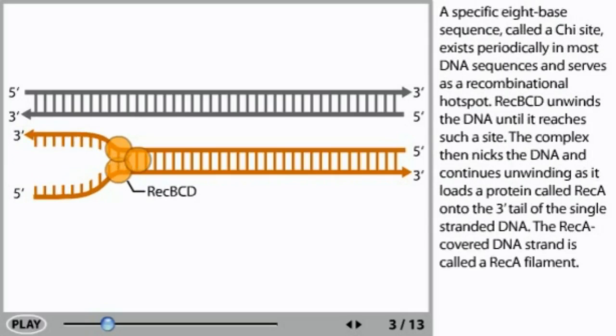A specific eight-base sequence called a chi-site exists periodically in most DNA sequences and serves as a recombinational hotspot. RecBCD unwinds the DNA until it reaches such a site.